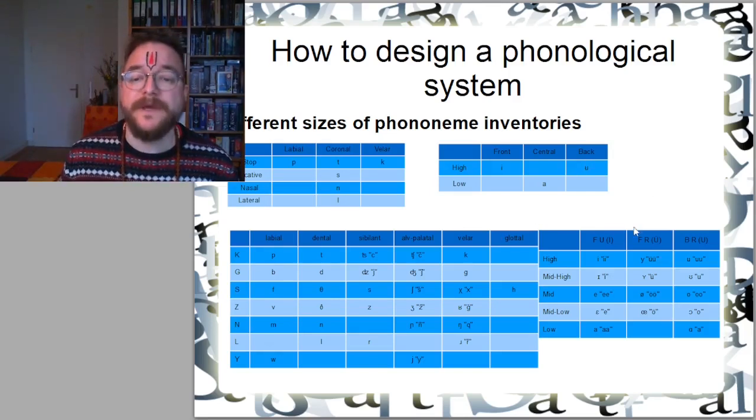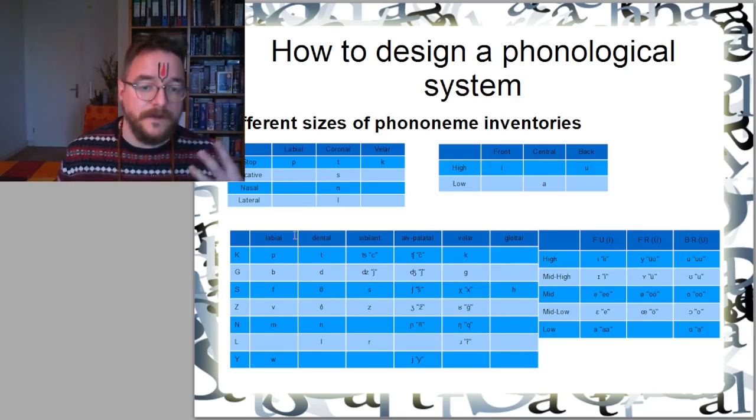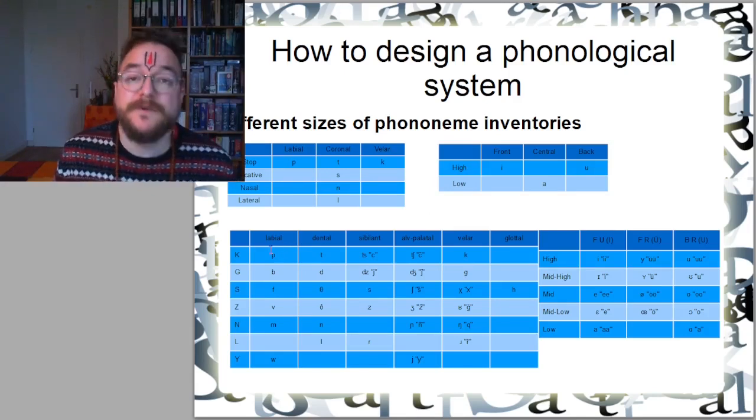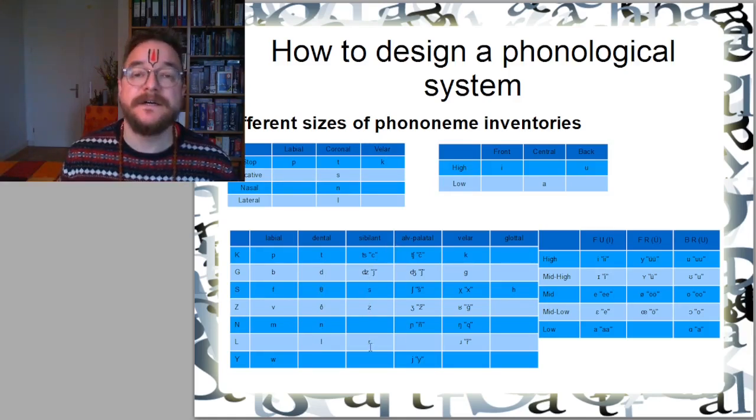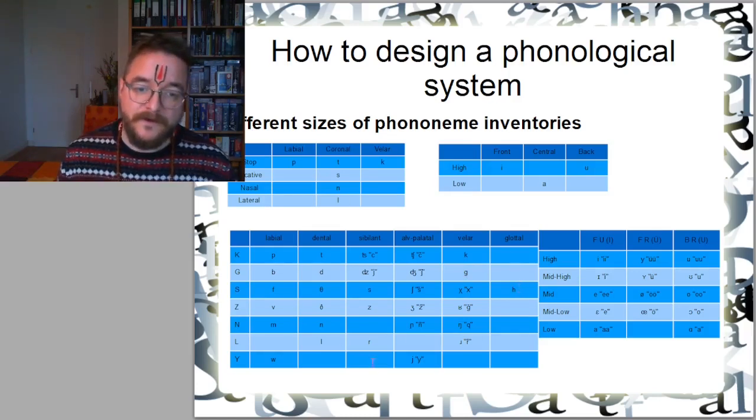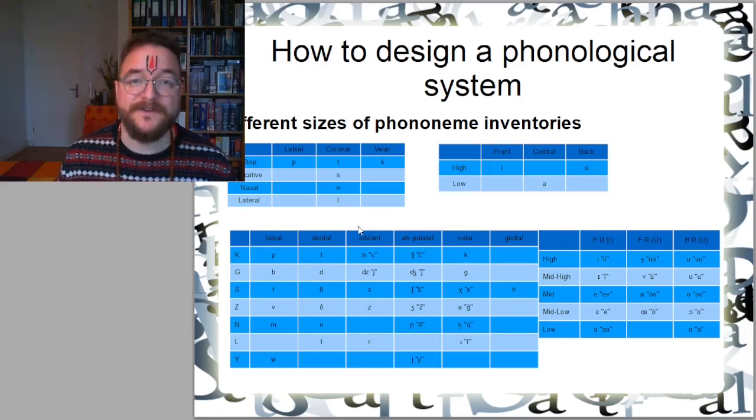Here below you see much bigger inventories. A big consonant inventory and a big vowel inventory. I'm also going to read them aloud so you get an impression what they represent. P, B, F, V, M, W, T, D, TH, DH, N, L, TS, DZ, S, Z, R, CH, J, SH, ZH, NY, Y, K, G, X, H, NG, R. That's a phoneme inventory of 30 consonants if I counted correctly.